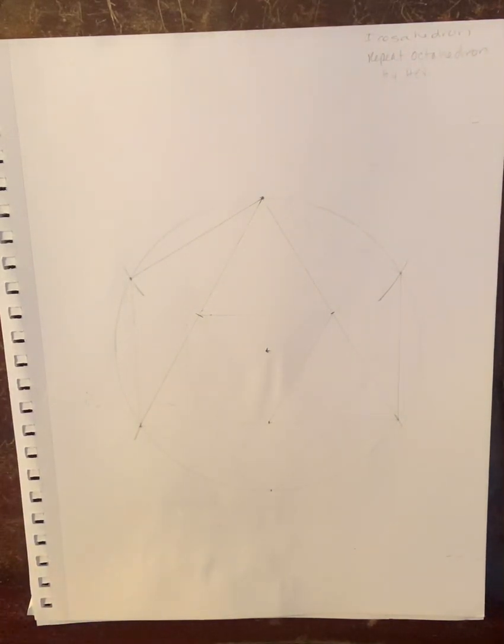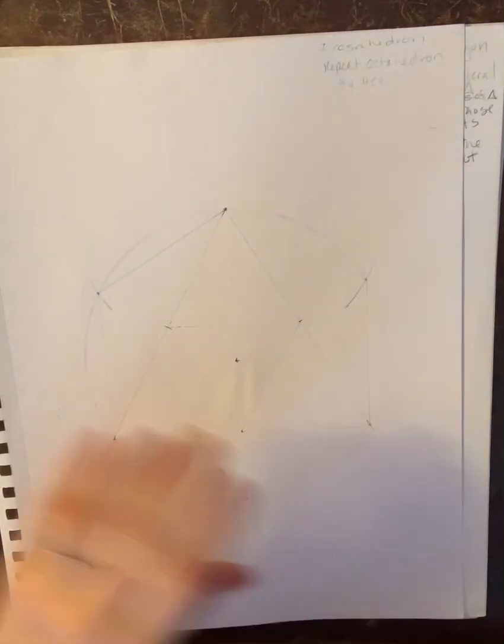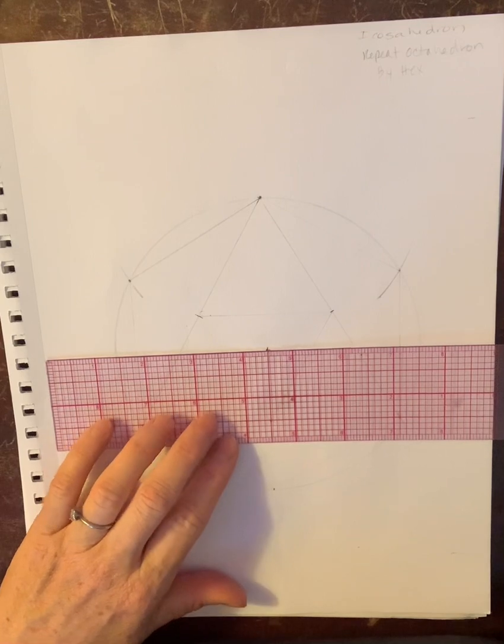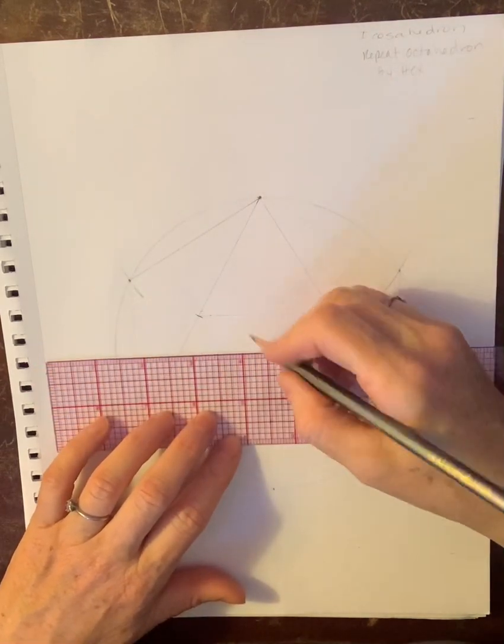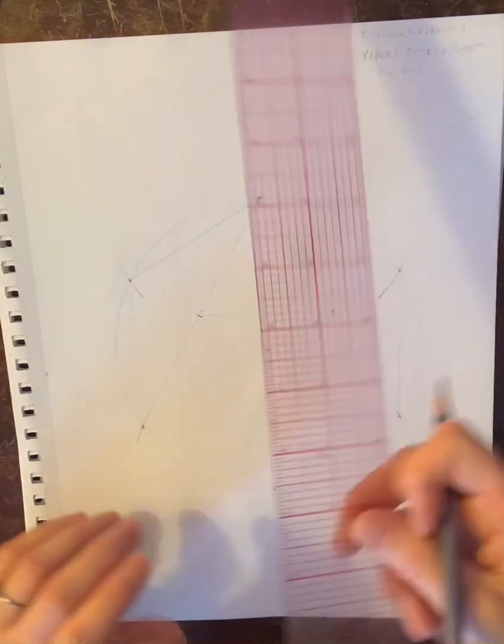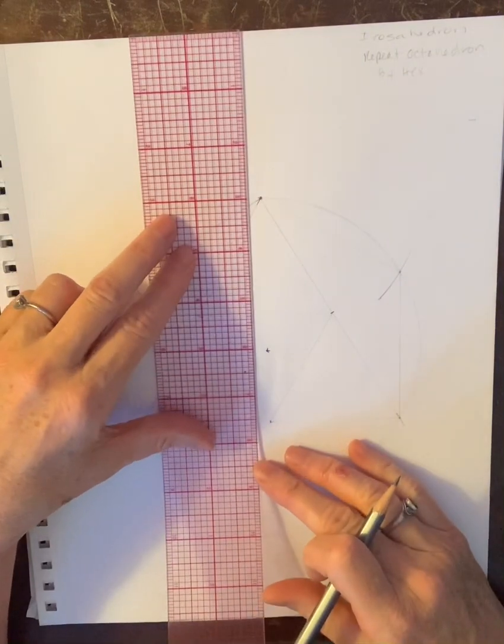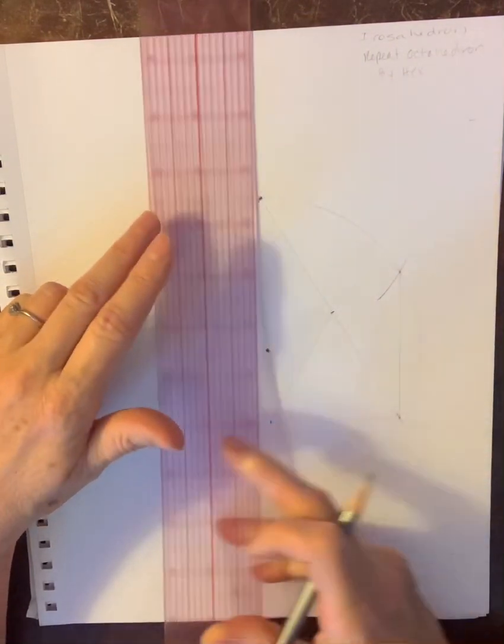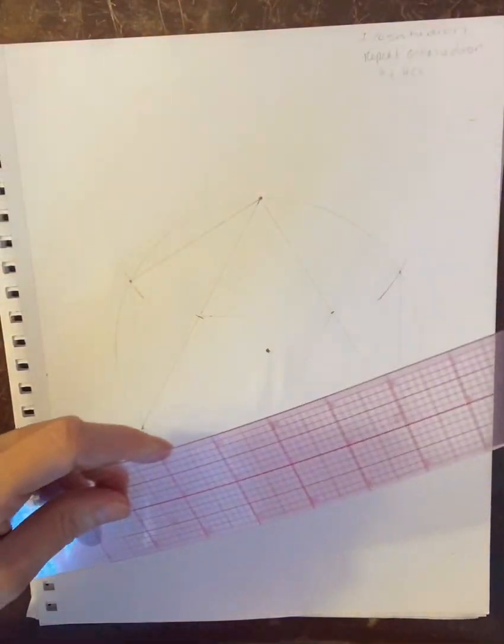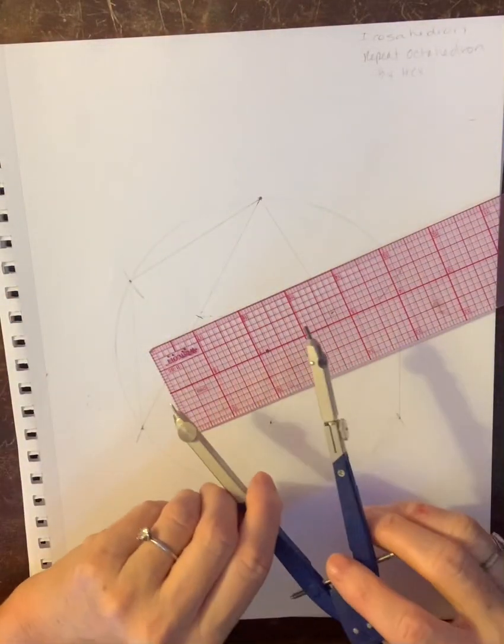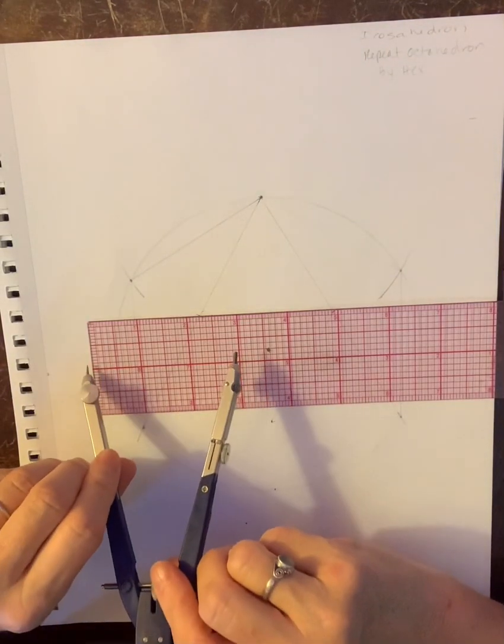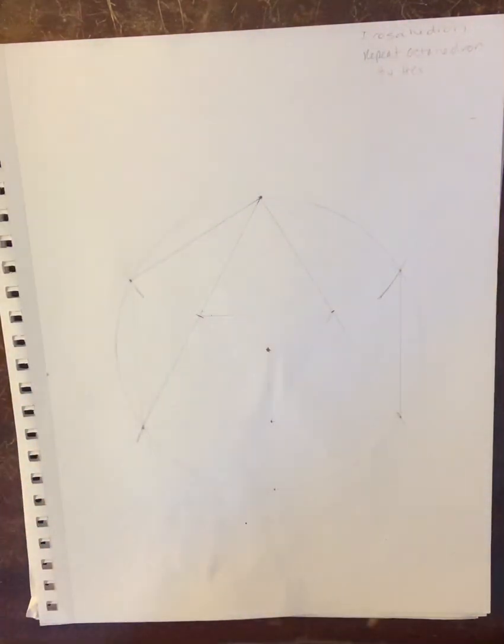You're going to first find the middle of your page. Coming across this is nine, so four and a half. This is twelve, so six. You find your middle. I have my compass on three inches, so my radius will be three, my diameter is six.